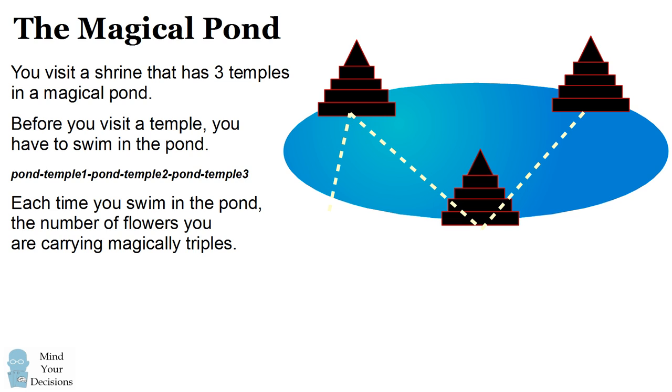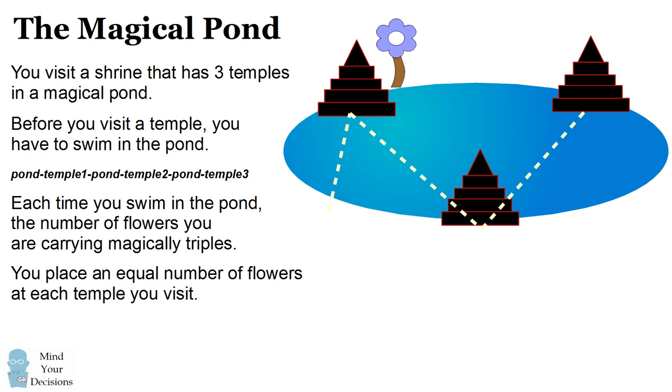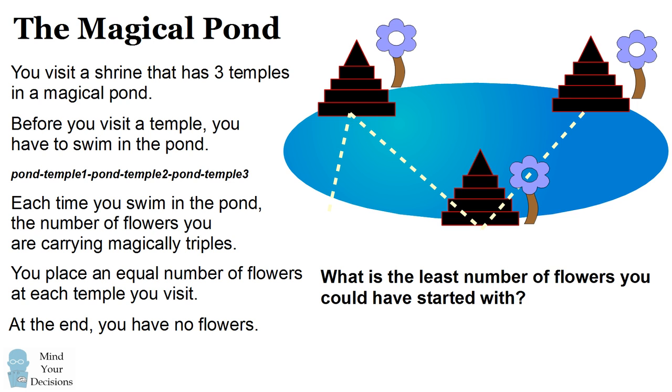Each time you swim in the pond, the number of flowers you are carrying magically triples. You place an equal number of flowers at each temple you visit. And at the very end, you have no flowers remaining. The problem is, what is the least number of flowers you could have started with?